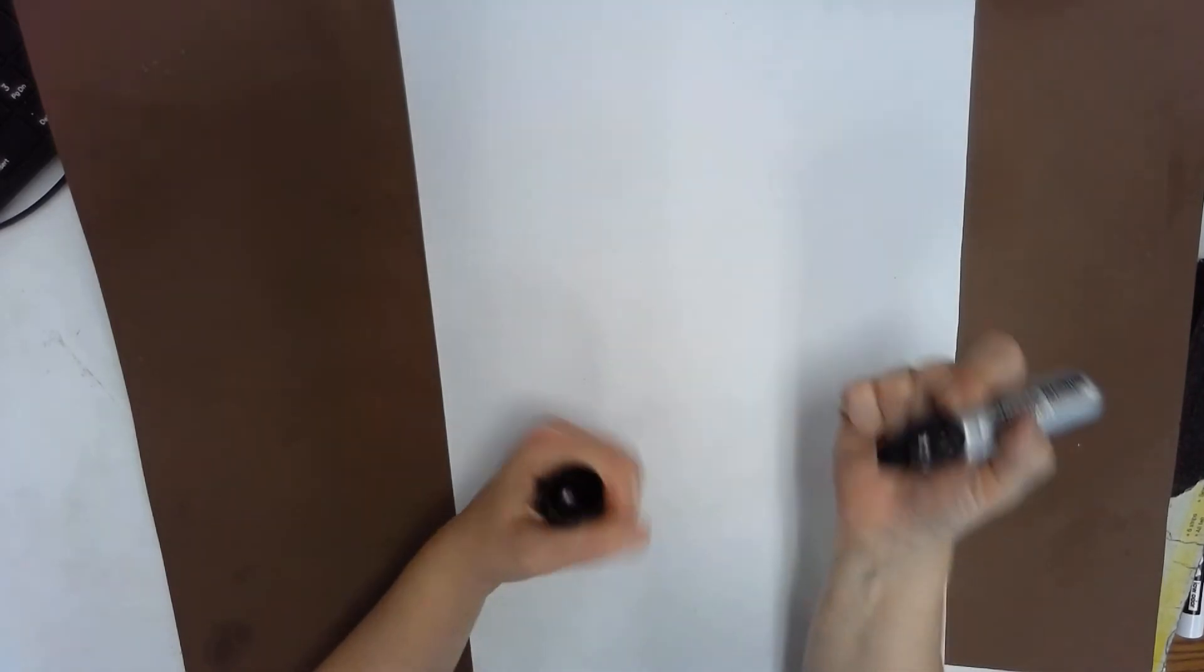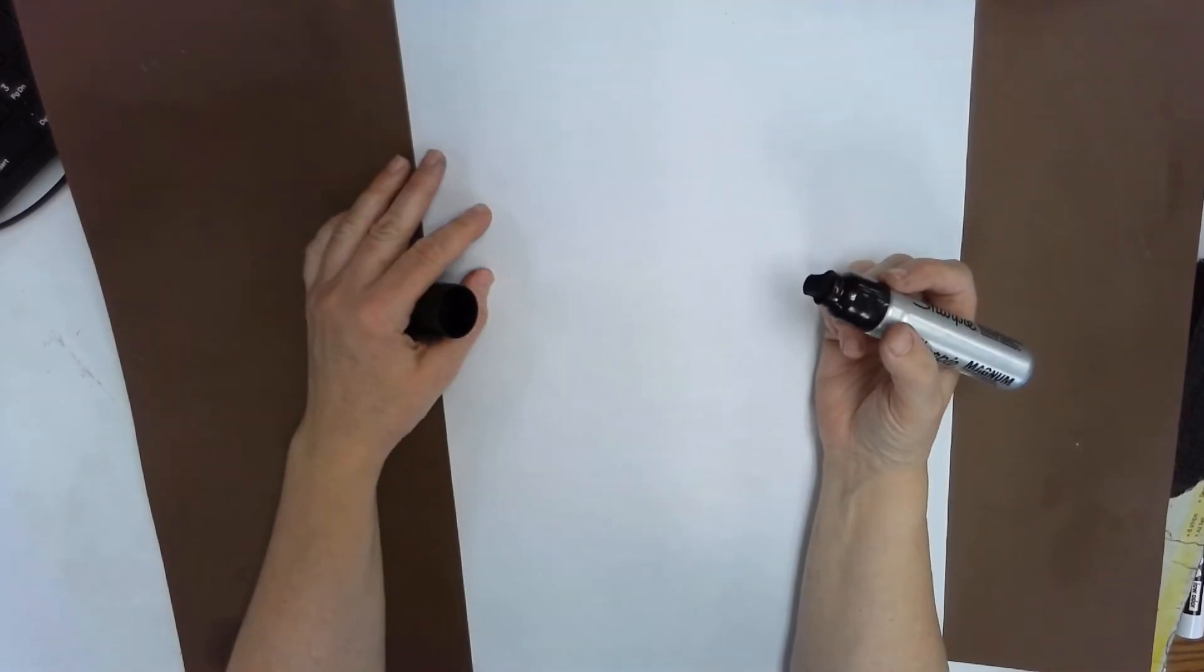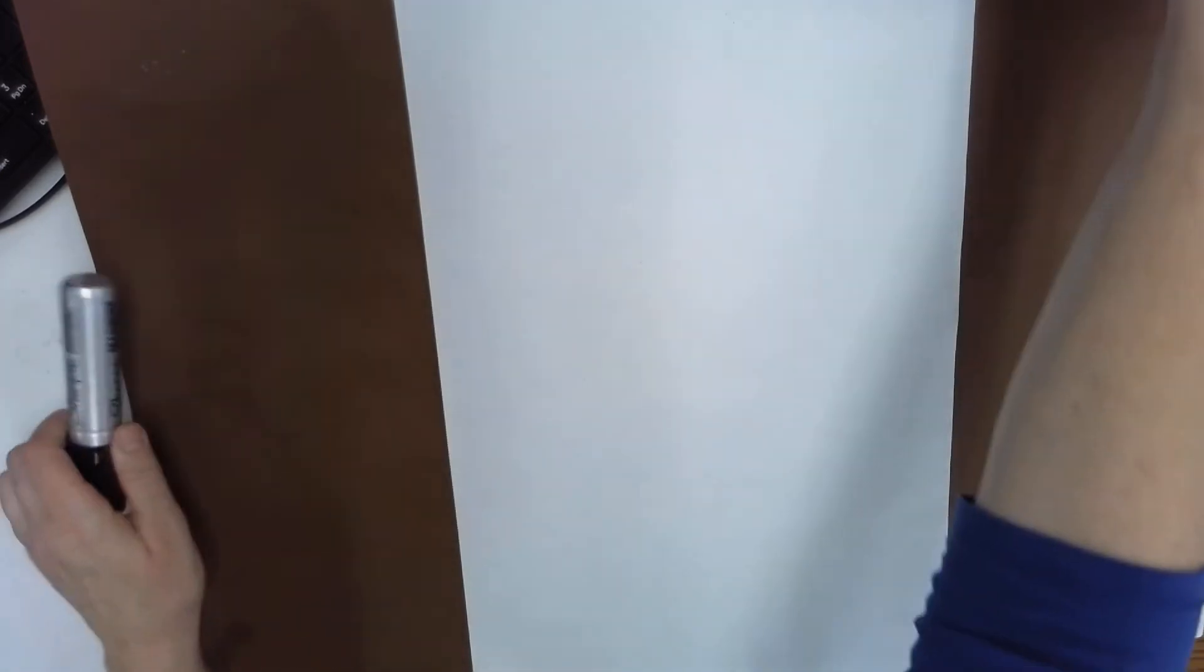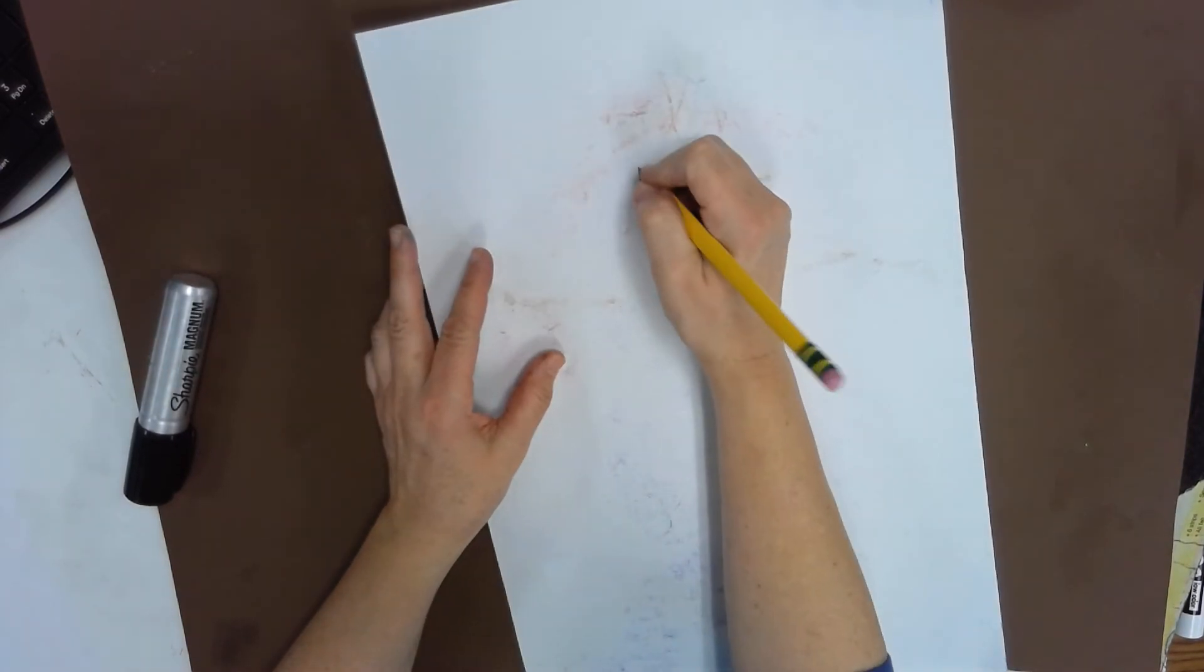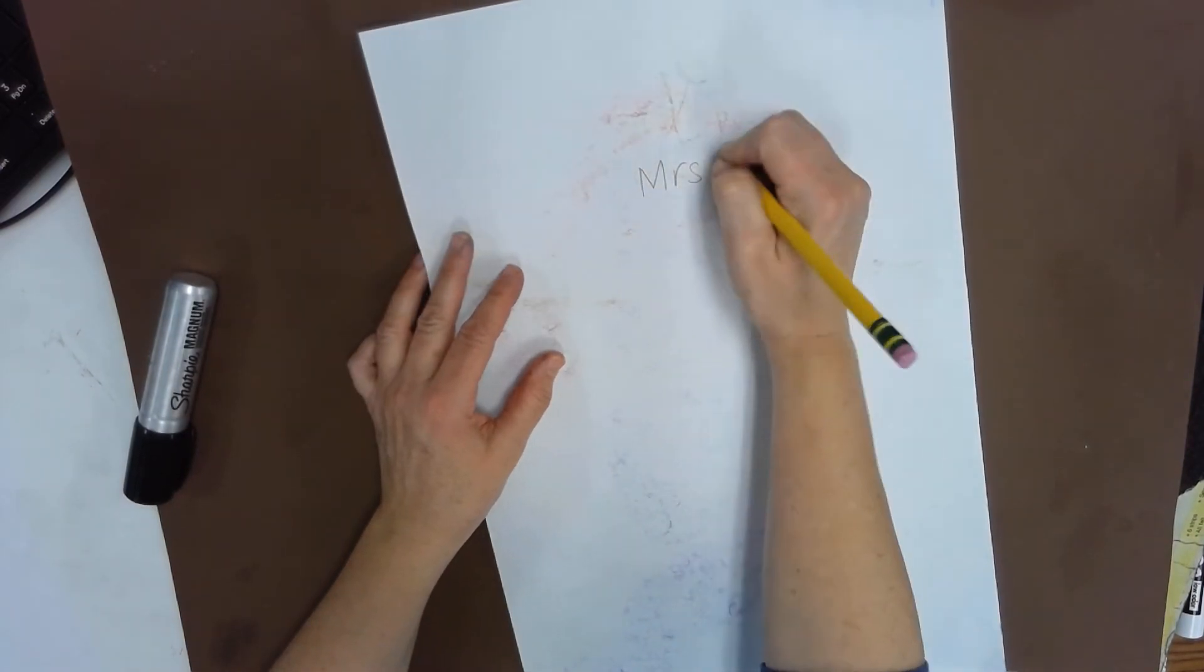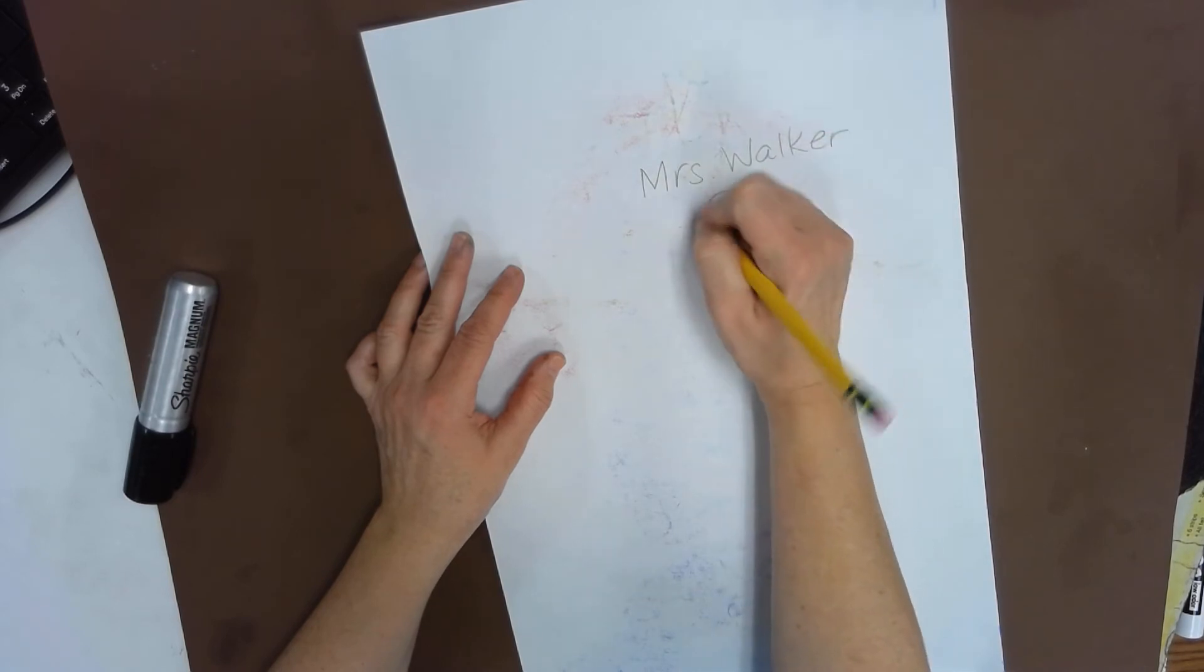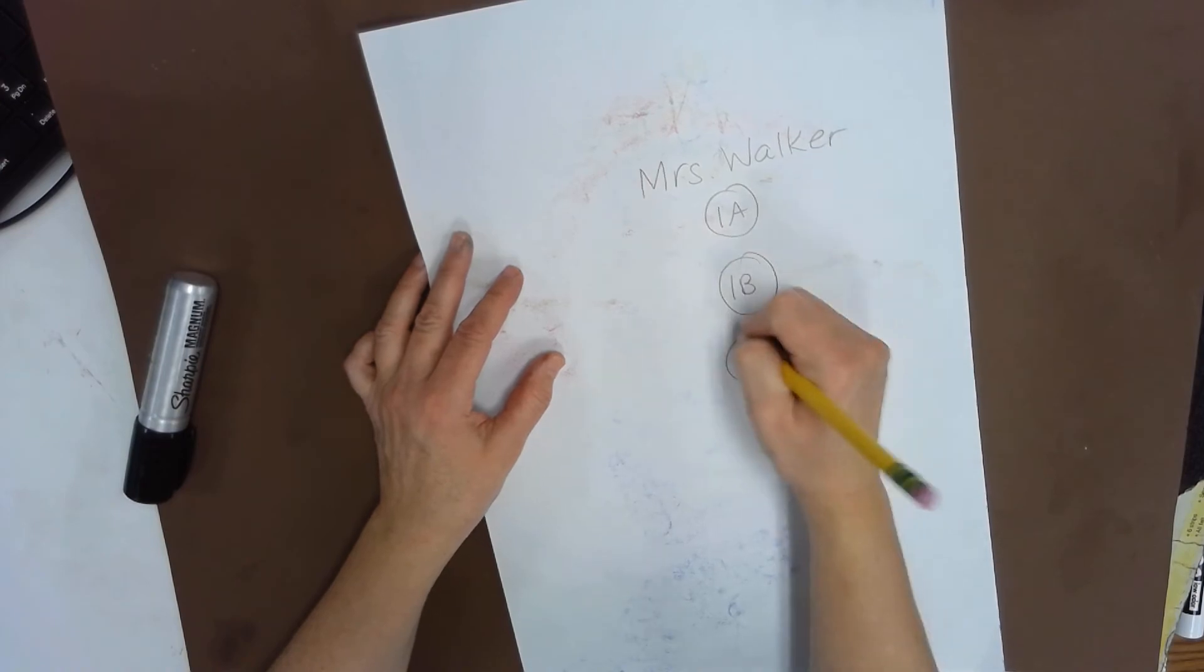Remember, once you've practiced, then we're all going to get our Sharpies out. Oh, what do I need to put on the back of my paper? I hope you said name and class code. So there's my name. Class code is either going to be 1A or 1B, or maybe you're in 1C, and then circle it.